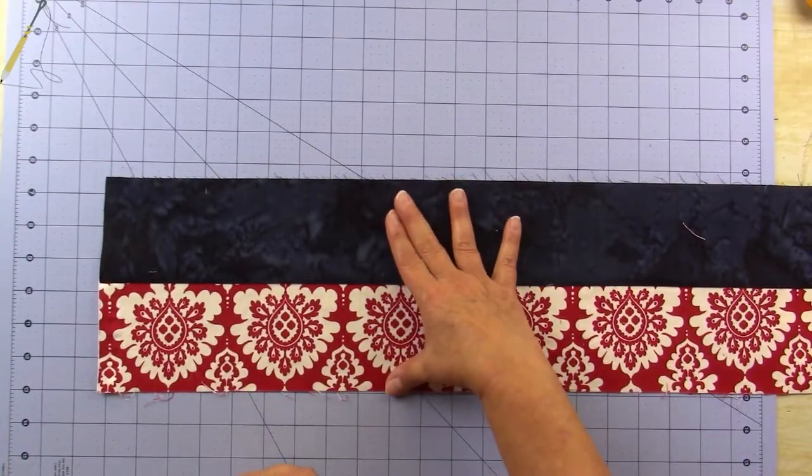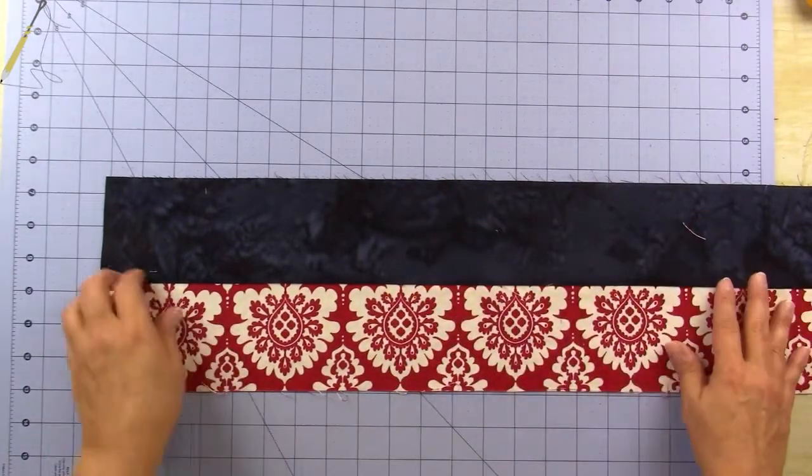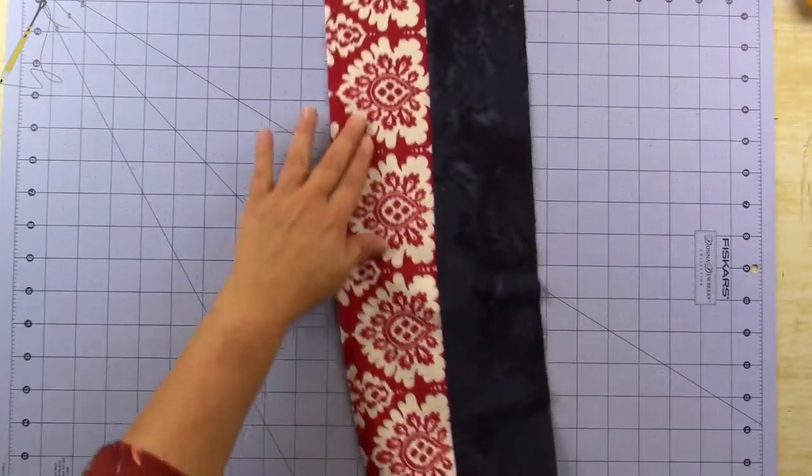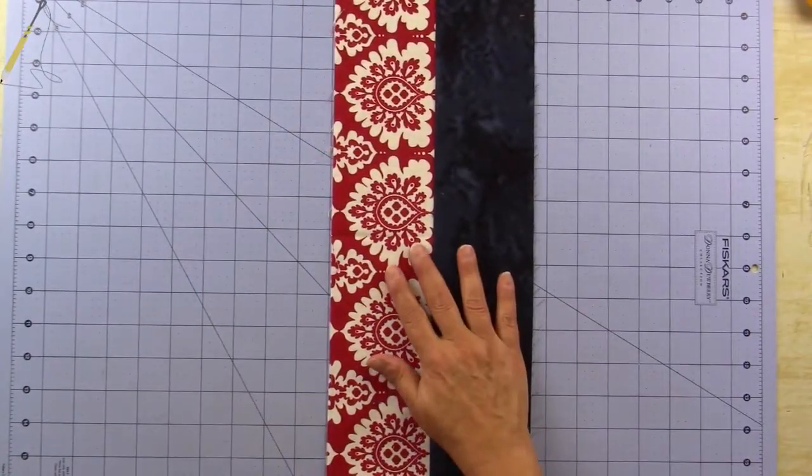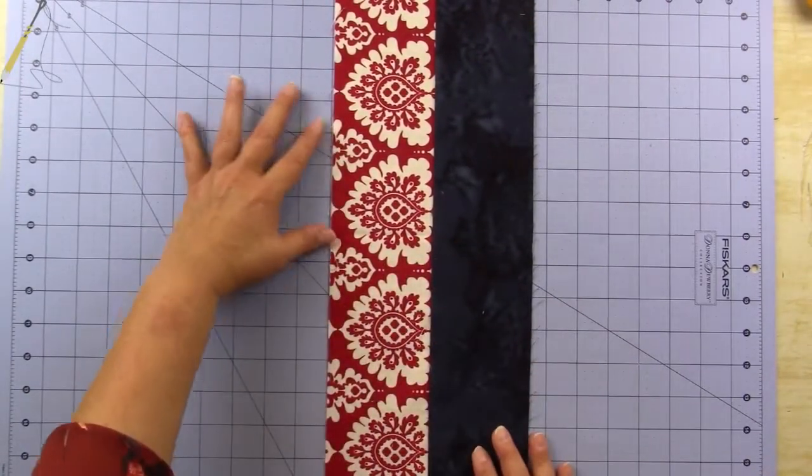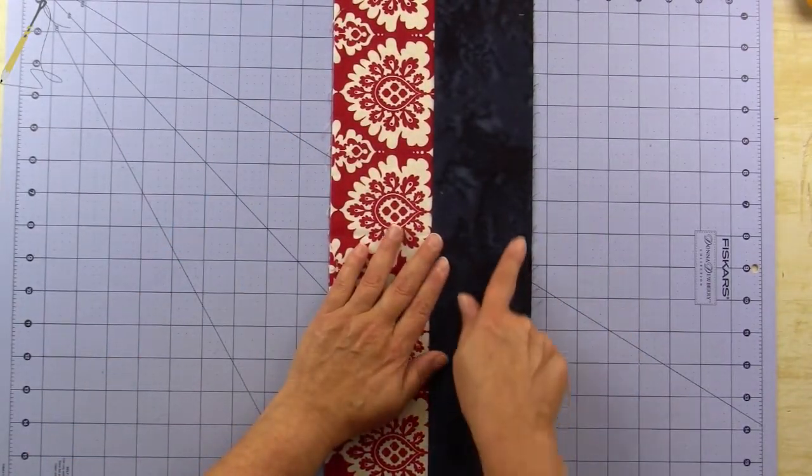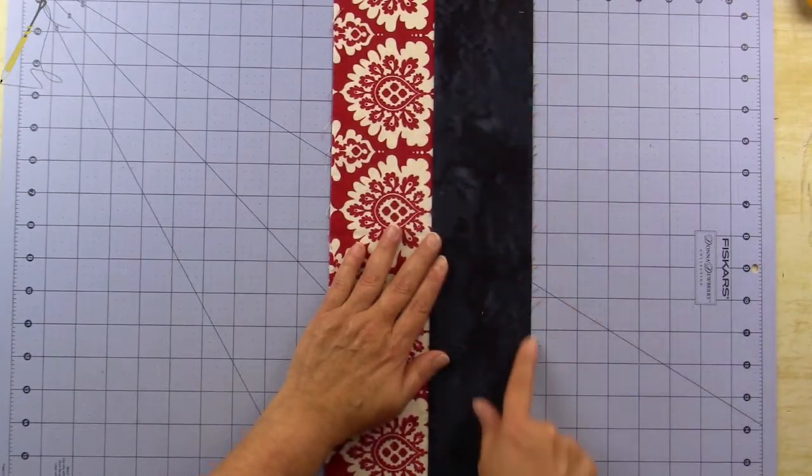So let's check it. I'm going to line it up on the 10 inch mark here so you can see it. So I'm at 10 inches here and I should be at 16 and a half over here, and I can see that I am at 16 and a half, so I'm very pleased with that.